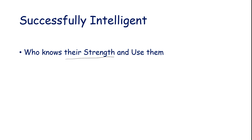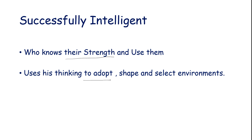The people who know their strengths and use them in an effective way are called successful intelligence people. They try to use their intelligence strength to adapt, shape and select environments.